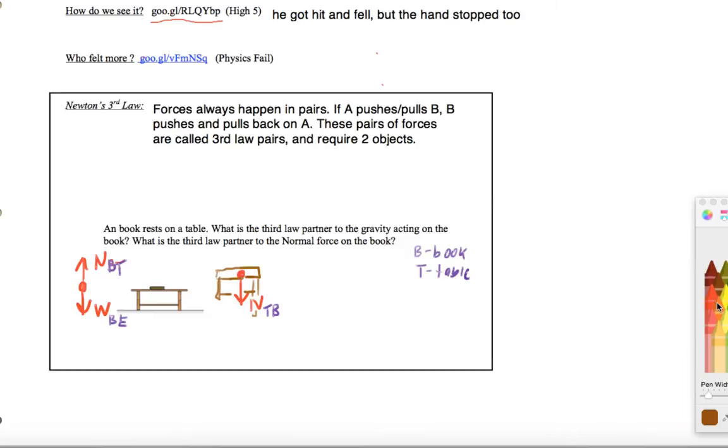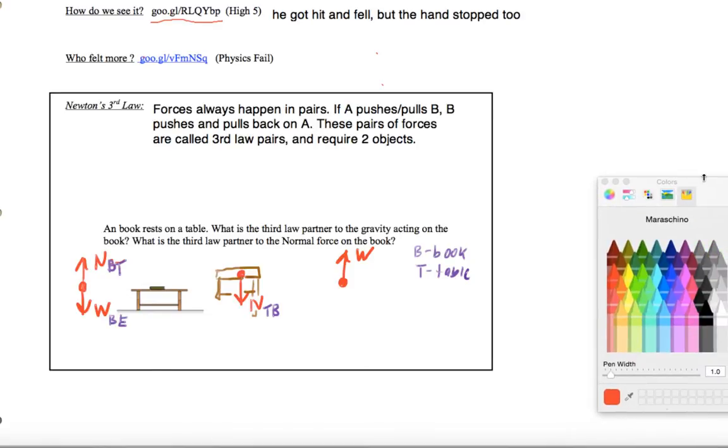Now for the next force, this is a bit puzzling, we're going to have the force of gravity pointing up on Earth due to the book. Now what that's going to look like, I'm going to label it as E, B, but now we actually have to interpret it.